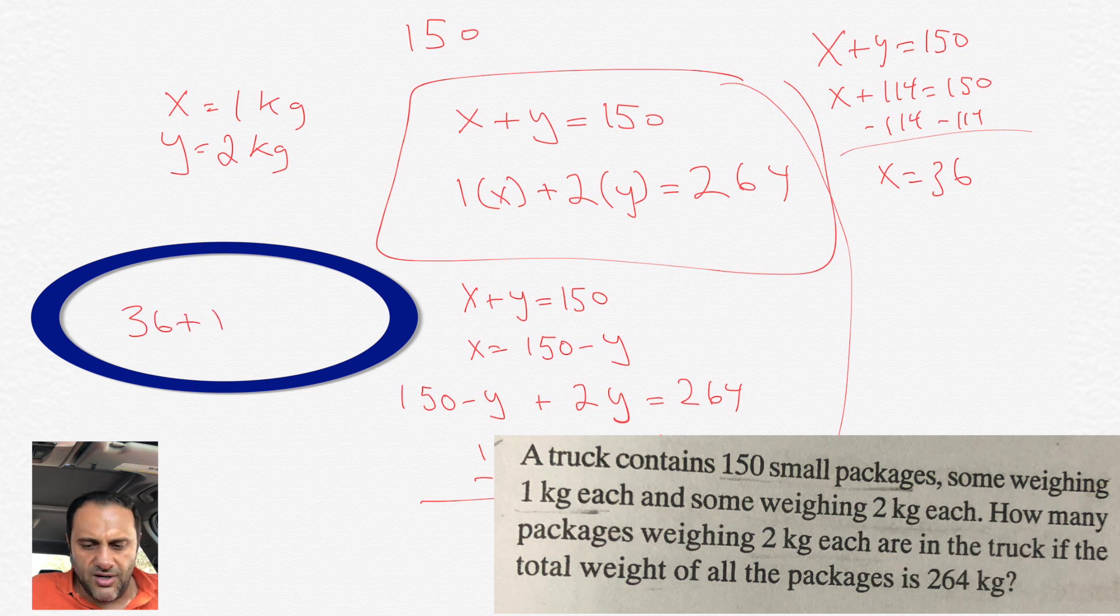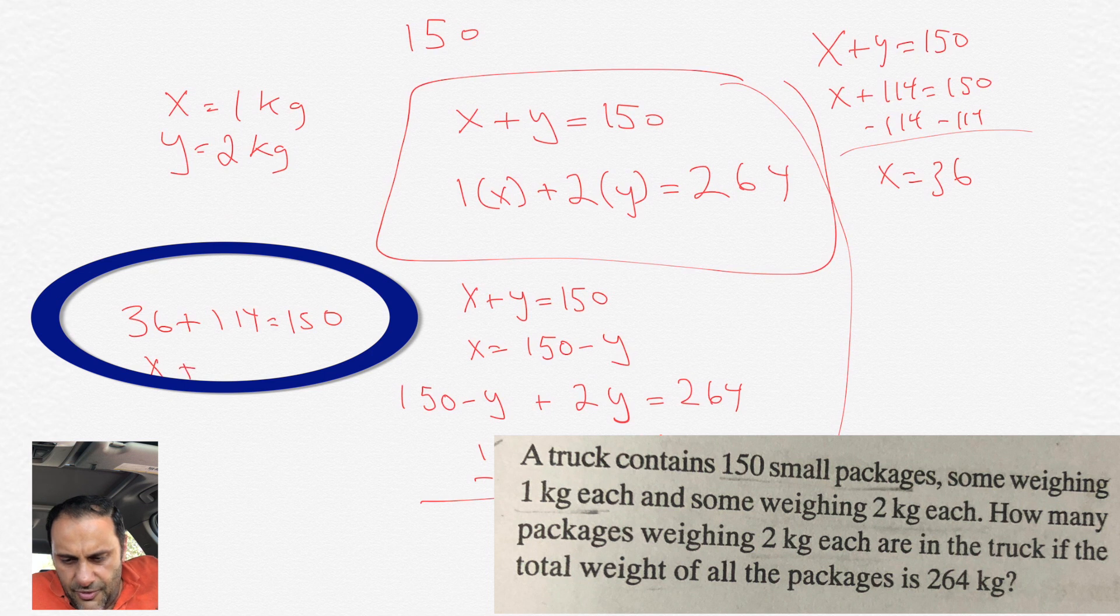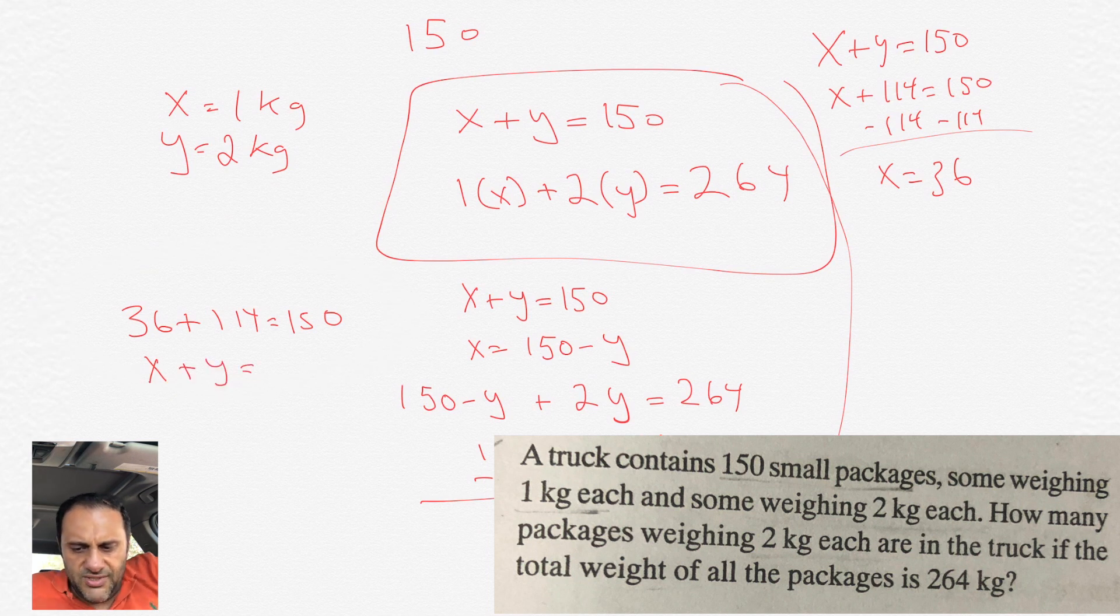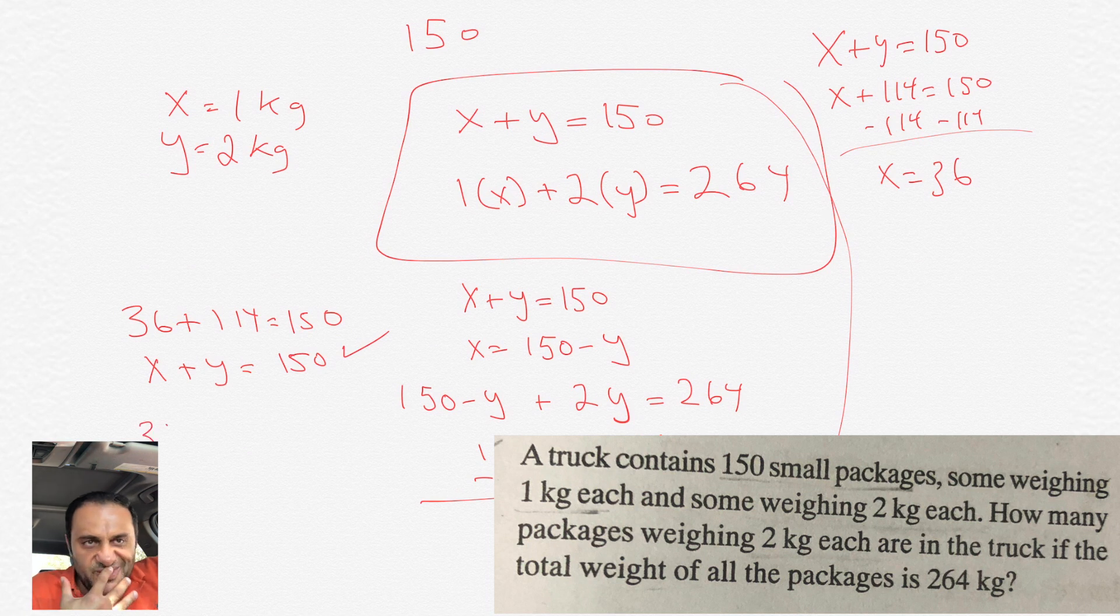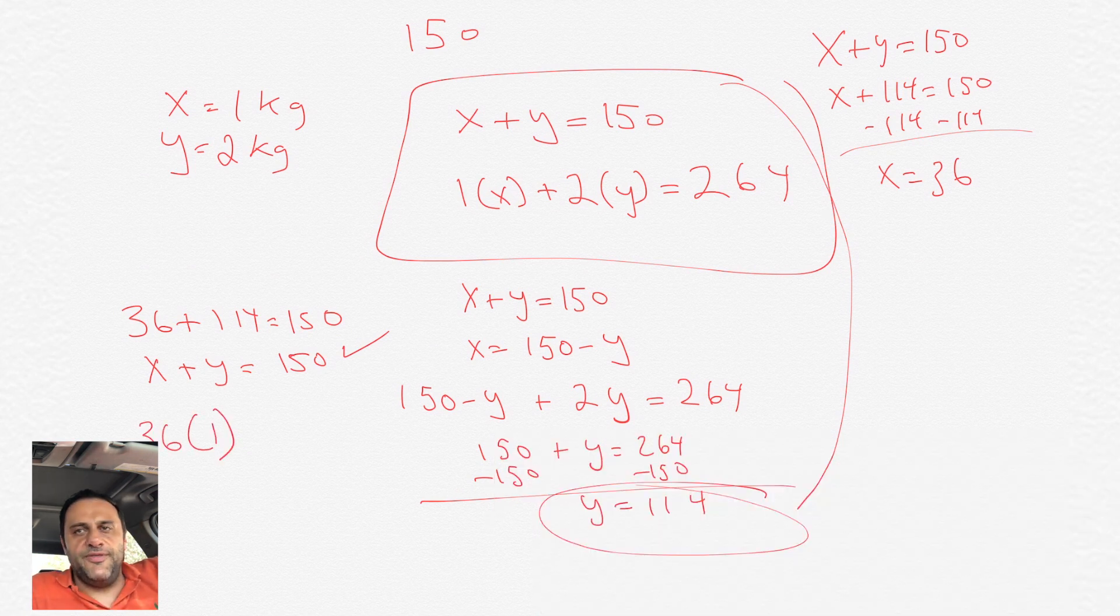If we want to check our work, we go to the X plus Y equals 150 and we put in 36 for X and 114 for Y, and indeed 36 plus 114 does equal 150, and we could even check it with the weight.